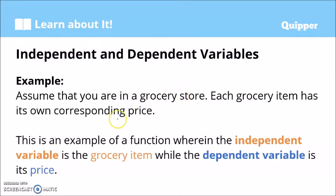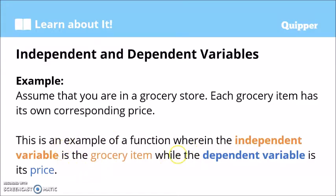Let's have another example. Assume that you are in a grocery store. Each grocery item has its own corresponding price. This is an example of a function wherein the independent variable is the grocery item, while the dependent variable is its price.